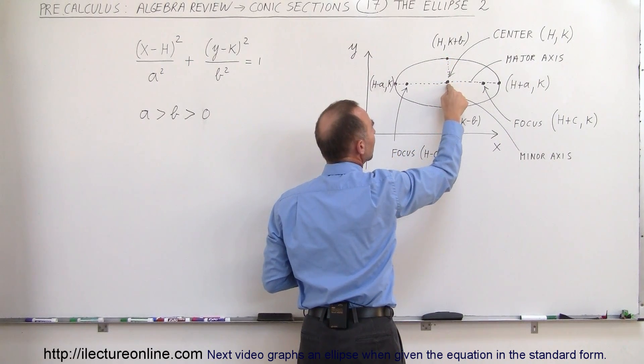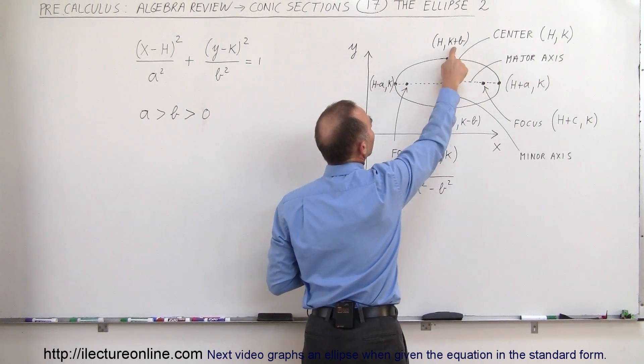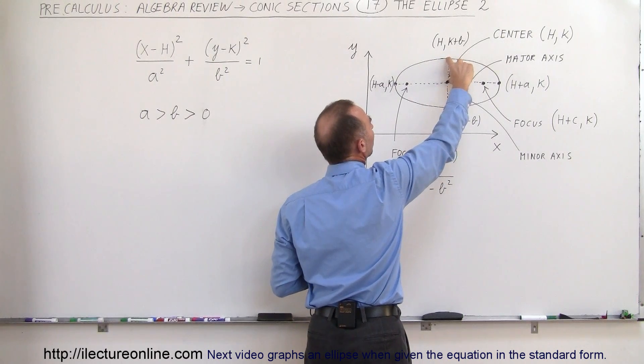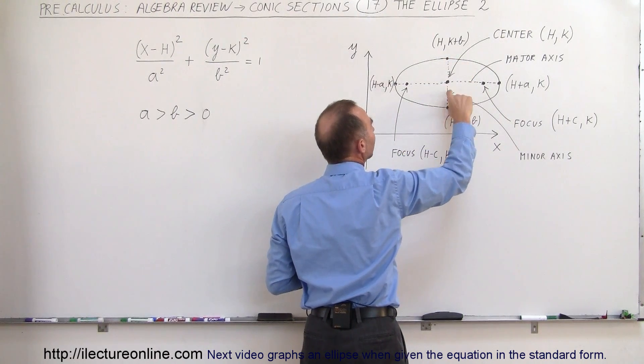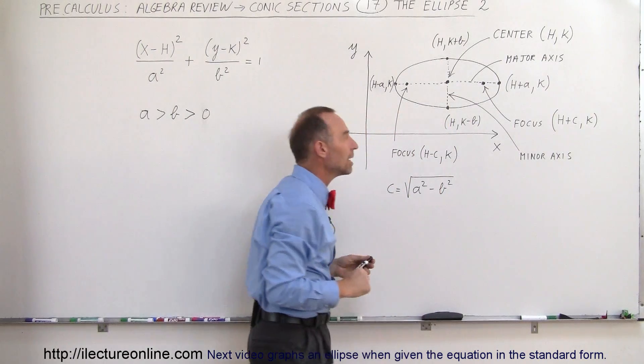Here you can see that the coordinates of this is h, which is the same as the x value for the center of the ellipse. And k plus b, this distance here is b. And here it will be h and k minus b, this distance here also being b.